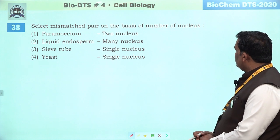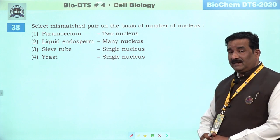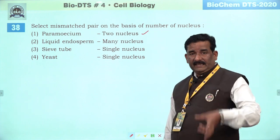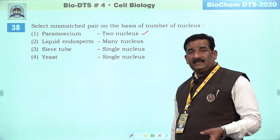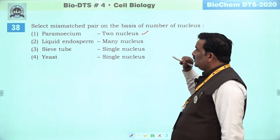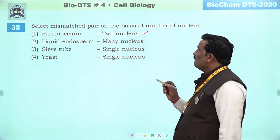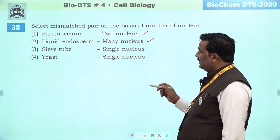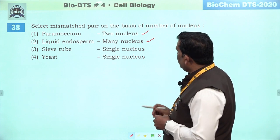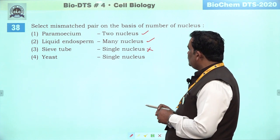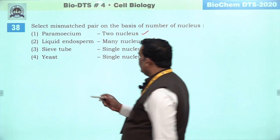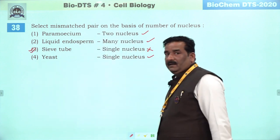Next question: select mismatched pair on the basis of number of nucleus. Paramecium mein do nucleus hote hain — NCRT mein diagram bhi hai. Chota jo nucleus hai woh inheritance karta hai, bada nucleus metabolic activities ko control karta hai. Liquid endosperm coconut ke andar — woh many nuclei contain karta hai. Sieve tube mein single nucleus nahi paaya jaata — nucleus absent hota hai. East mein single nucleus hota hai. Jo mismatched hai woh third hai — third is the answer.